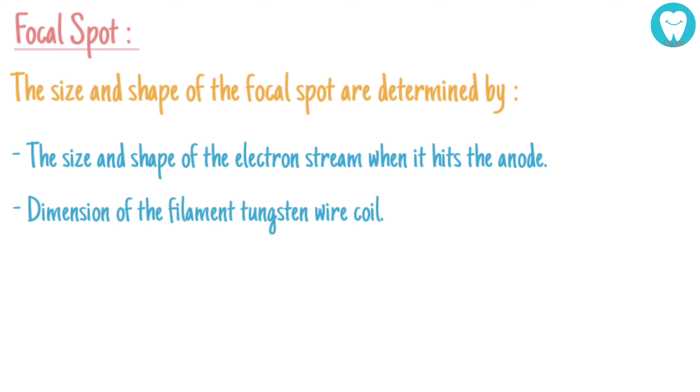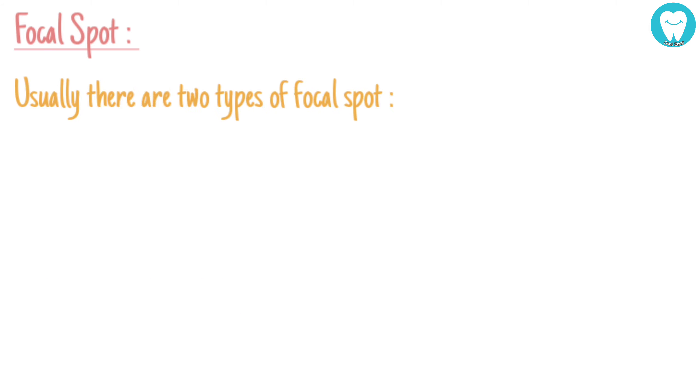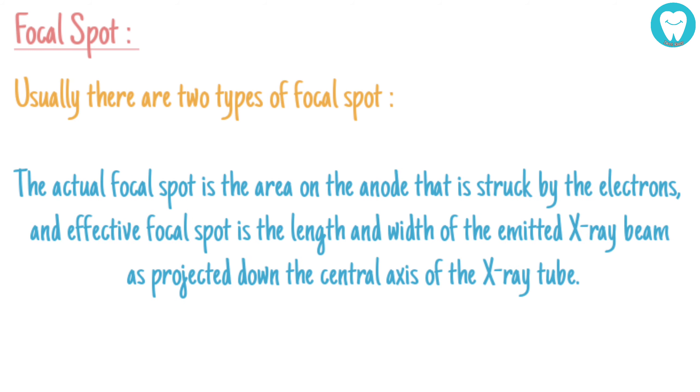Dimension of the filament tungsten wire coil, construction of the focusing cup, and the position of the filament in focusing cup. Usually there are two types of focal spot: the actual focal spot is the area on the anode that is struck by the electrons, and effective focal spot is the length and width of the emitted X-ray beam as projected down the central axis of the X-ray tube.